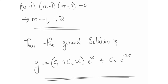The general solution is y equal to (c1 plus c2·x) into e raised to x — since m equals 1 is a repeating root — plus c3·e raised to -2x.